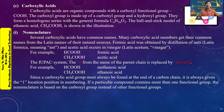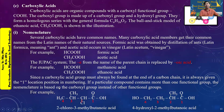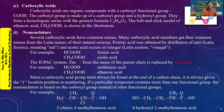The COOH group is the first carbon in the chain. For example: 2-chloro-3-methylbutanoic acid, or trimethylpentanoic acid. Another example is 1-chloro-3-methylbutanoic acid.